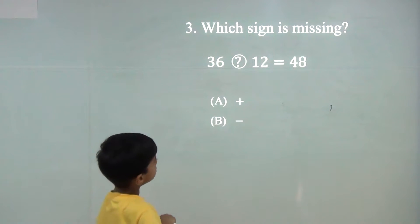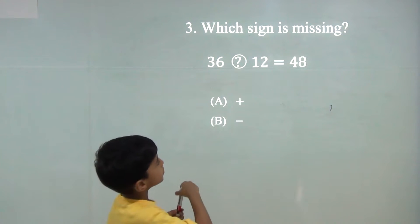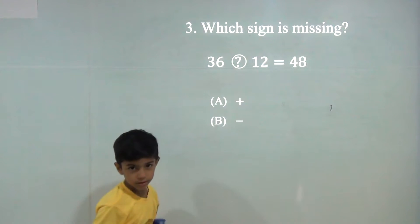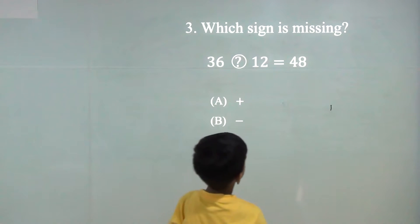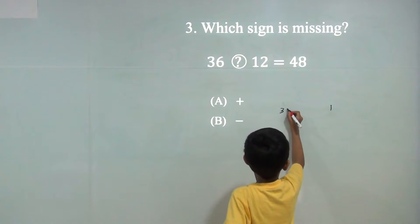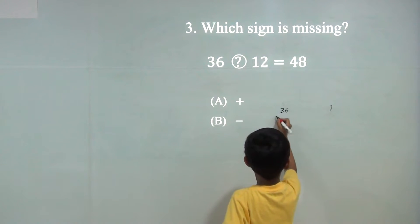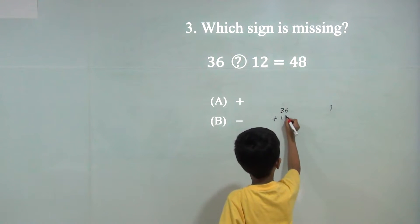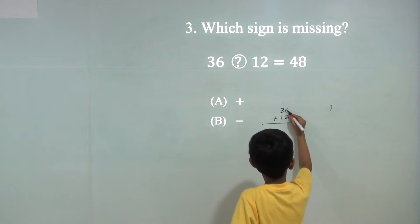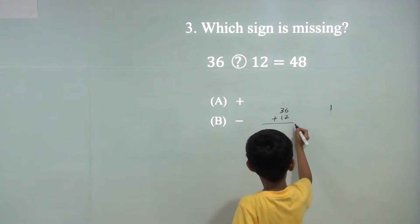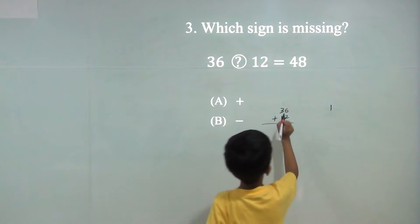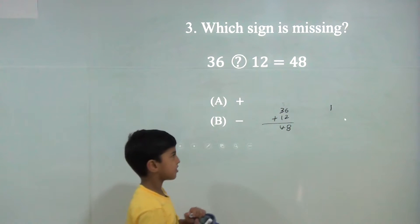36 plus, because there is a bigger number. 6 plus 12: 4 plus 12, and 6 plus 2 is 8. 3 plus 1 is 4. The answer is 48.